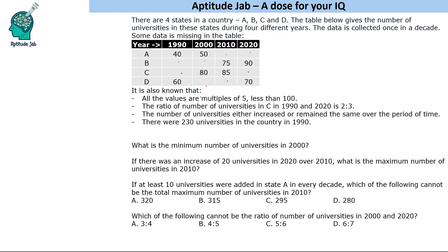What we are given: all the values are multiples of 5 and less than 100. The ratio of the number of universities in C in 1990 and 2020 is 2:3. The number of universities either increased or remained the same over the period — so there will be no decrease. There were 230 universities in the country in 1990.